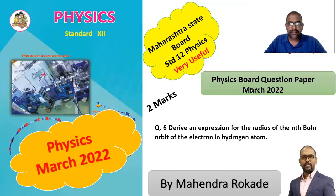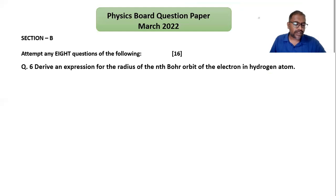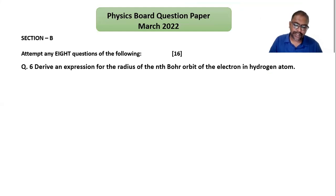Next question from the March 2022 examination. Derive an expression for radius of the nth orbit of the electron in hydrogen atom. This is a two-mark question. We have to derive the expression for the radius of the nth orbit.